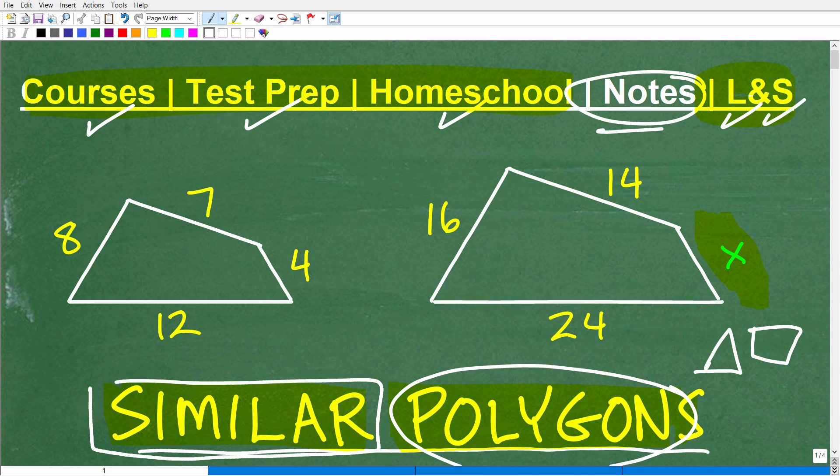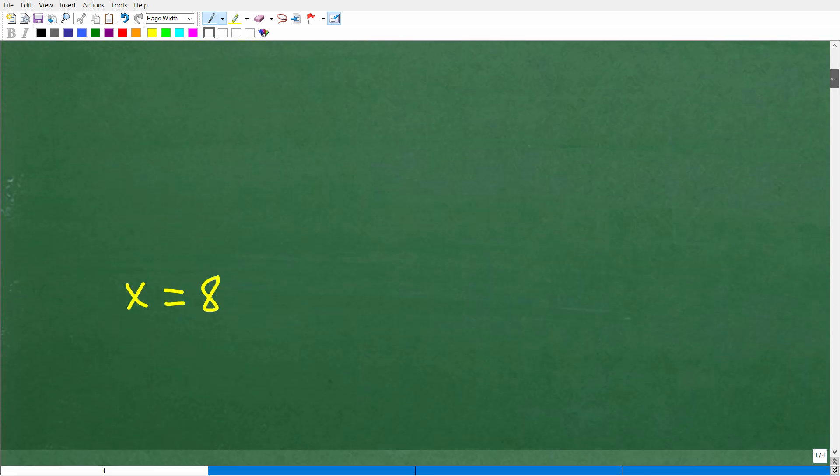And now similar—the symbol for similarity is this little symbol. We'll talk more about what similar means. Let's show you the answer. We're trying to determine this length of these similar polygons, and the length of that side is 8.